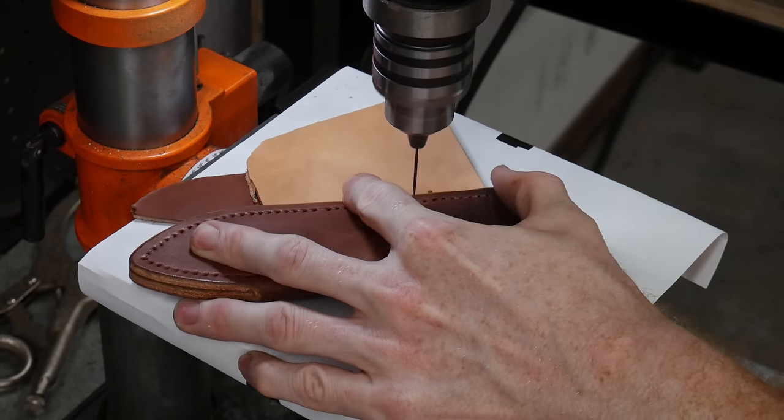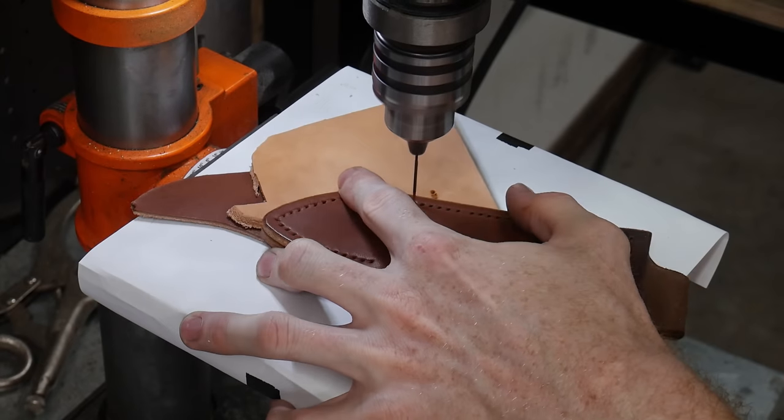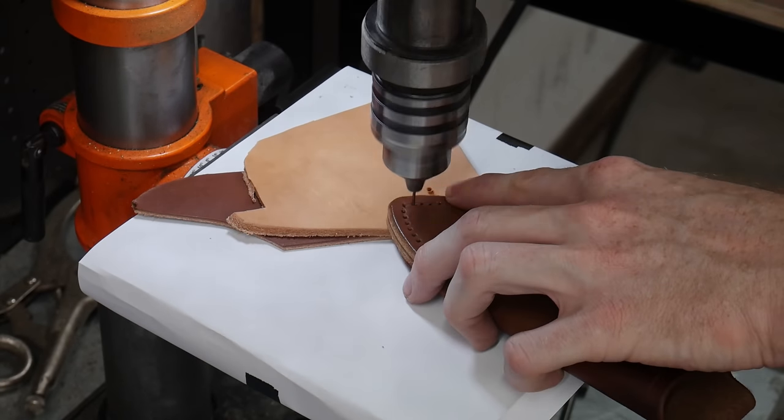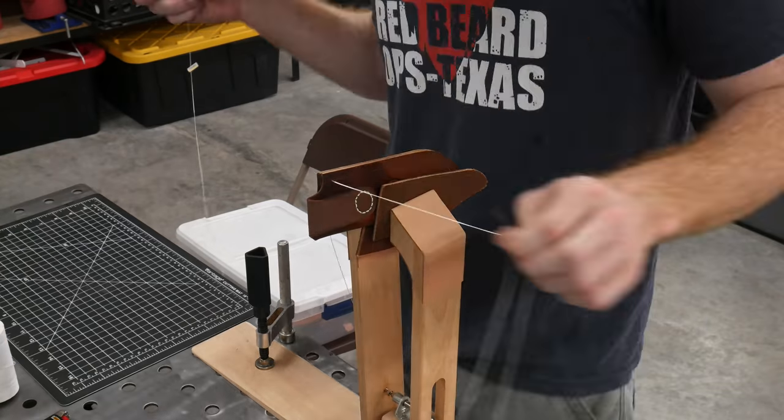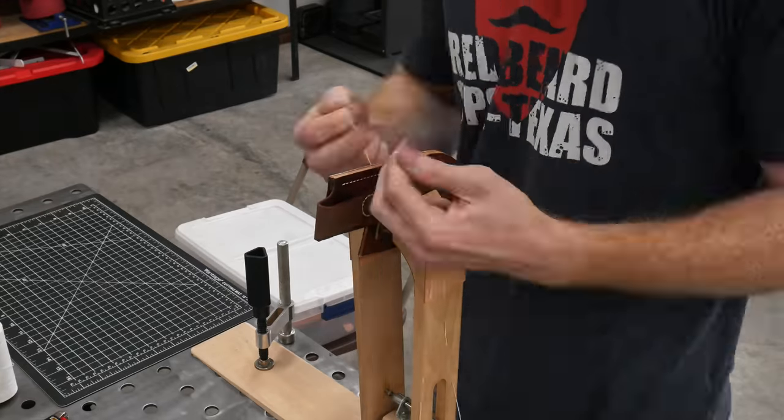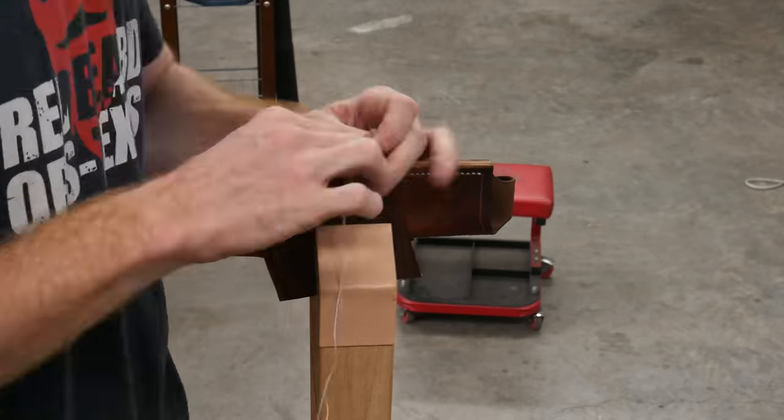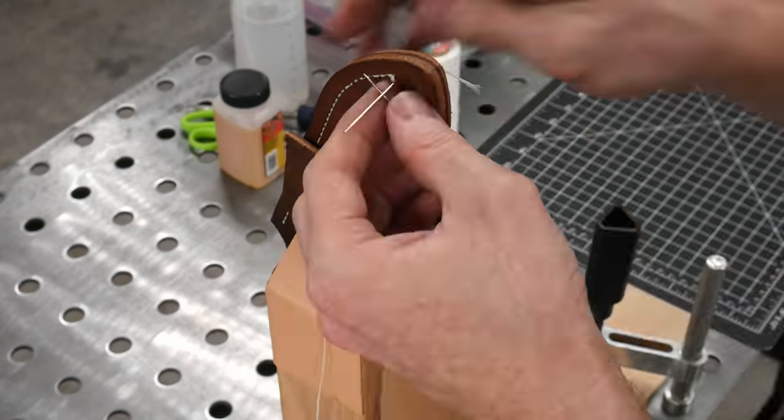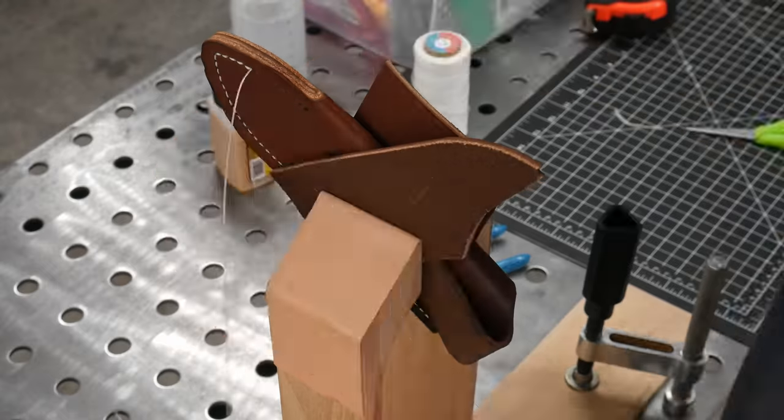I have found that a good rule of thumb for cutting your thread is multiplying the distance you plan on saddle stitching by 10 and then using that length of thread for your project. I'm also using some high quality John Jones Saddler's needles, and these have been performing extremely well for me.